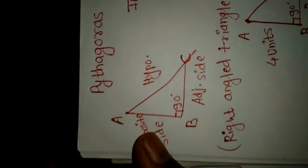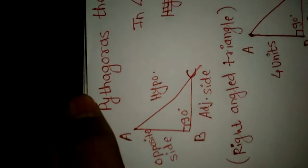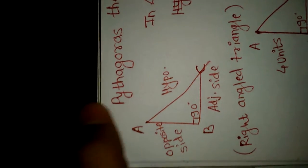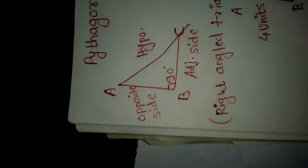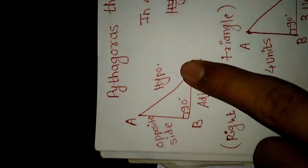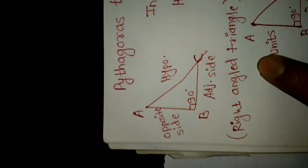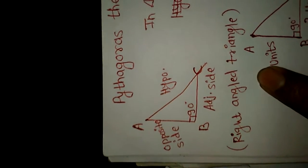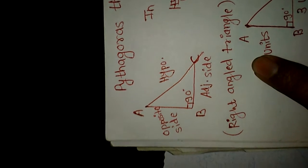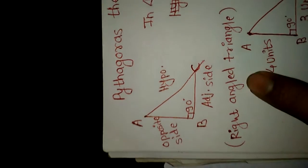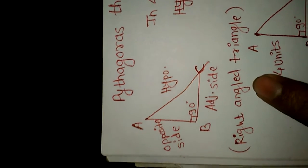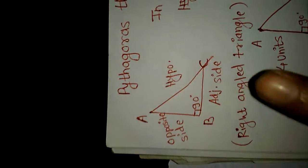Pythagoras theorem only applies to which triangle? Only right-angle triangle. If the right-angle triangle is true, Pythagoras theorem applies to it. For other triangles — acute-angle triangle, obtuse-angle triangle, equilateral triangle, scalene triangle, and isosceles triangle — Pythagoras theorem does not apply. Pythagoras theorem only applies to the right-angle triangle.